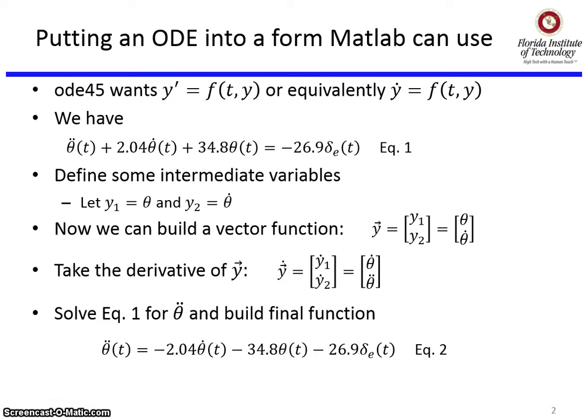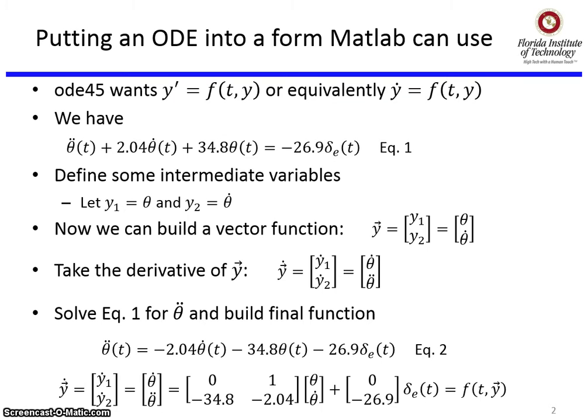Solve equation 1 for θ̈, and we'll use that to build our final function. So θ̈ = -2.04θ̇ - 34.8θ - 26.9δₑ. We'll call that equation 2, and now we can use that to build the ẏ function.